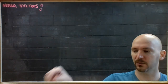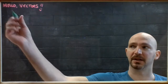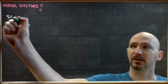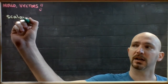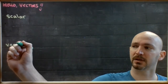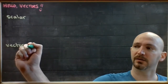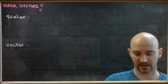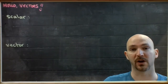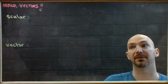We're going to start with just two words: scalar and vector. These are the two types of values that you're going to come across in physics, calculus, or math in general.